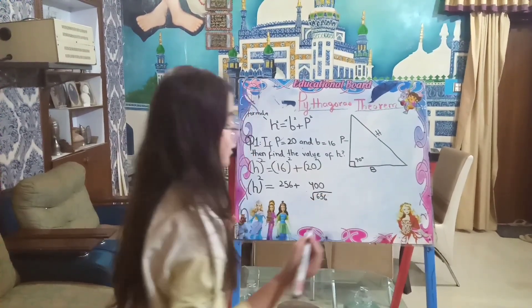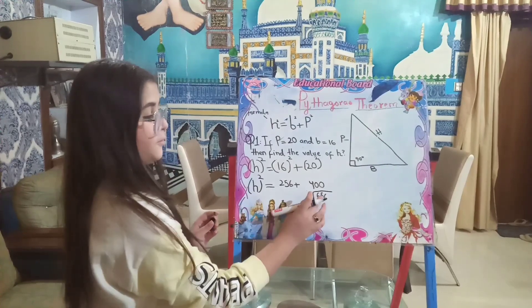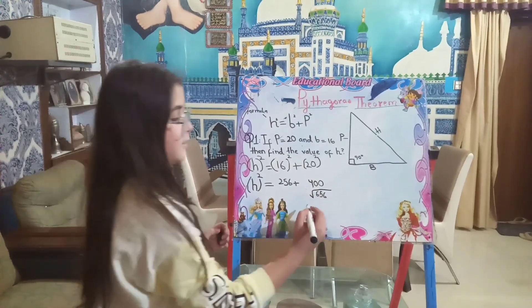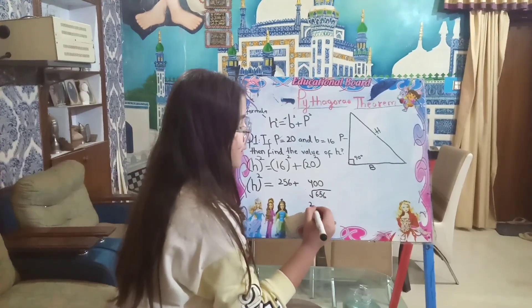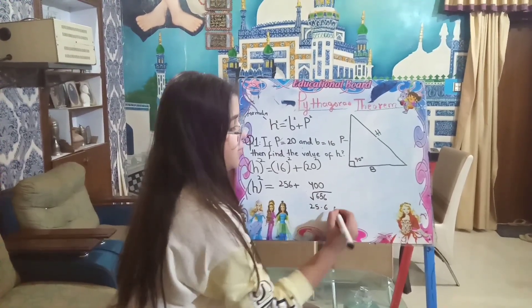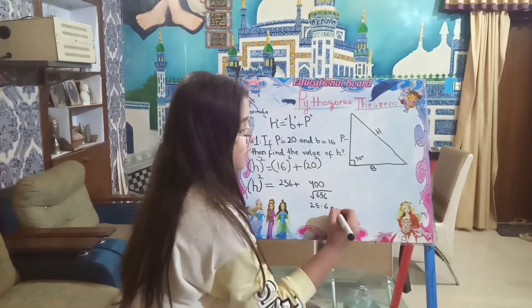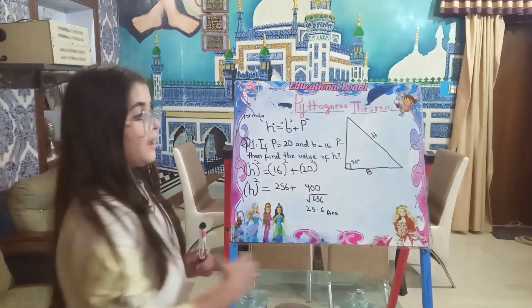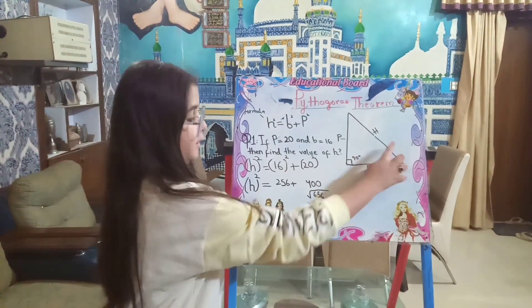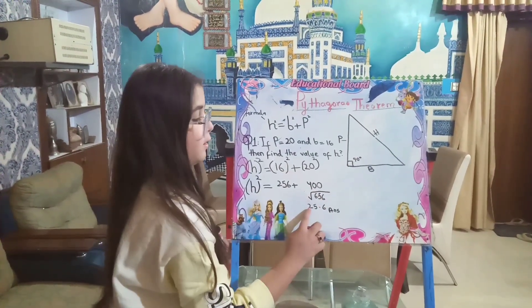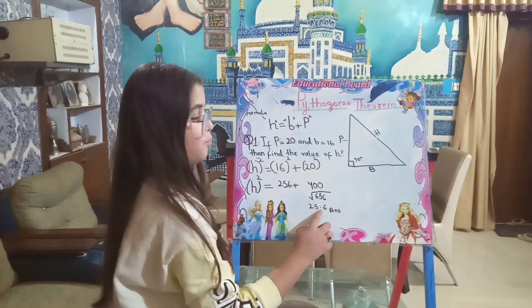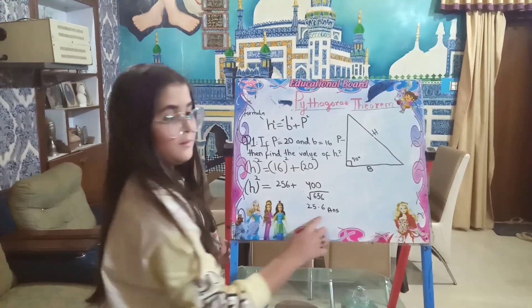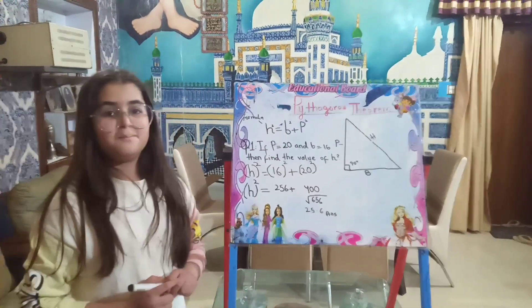The square root of 656 is 25.6, which is the answer. And the value of hypotenuse is 25.6. Thank you.